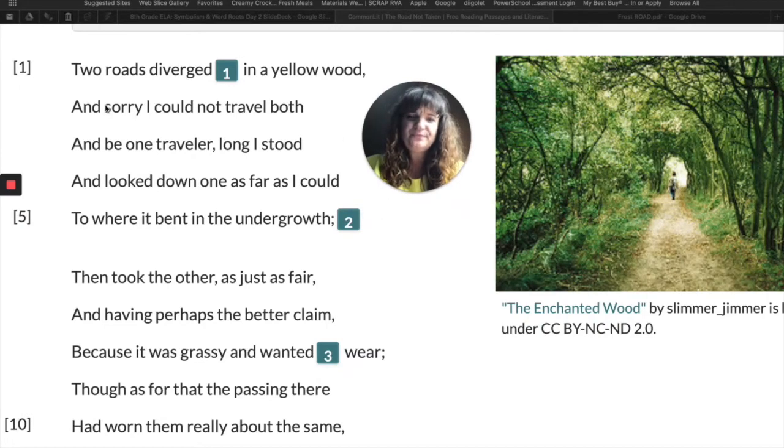So we're using this image on the side to visualize Robert Frost or the speaker of the poem standing at a fork in the road, where two roads diverged. They separated. So he could go one way or he could go the other. This seems like some pretty straightforward and literal language.